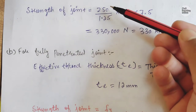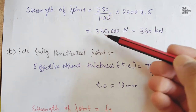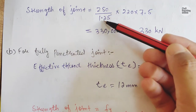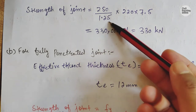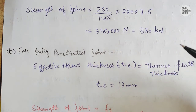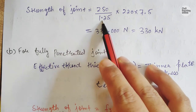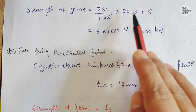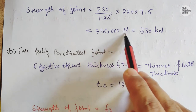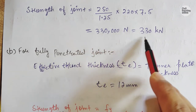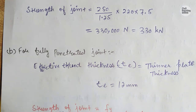We substitute the values: Fy = 250 N/mm², gamma Mw = 1.25, Lw = 220 mm, and Te = 7.5 mm. This gives us the strength of the joint for partial penetration.